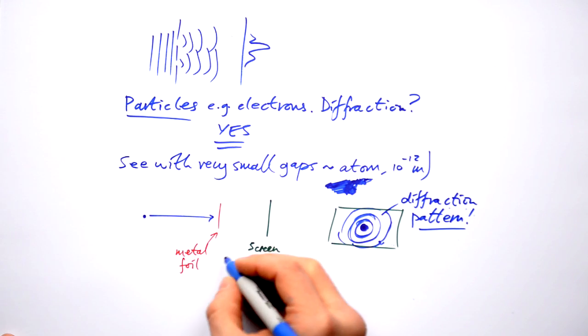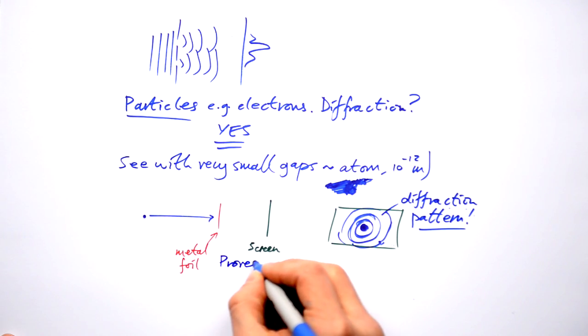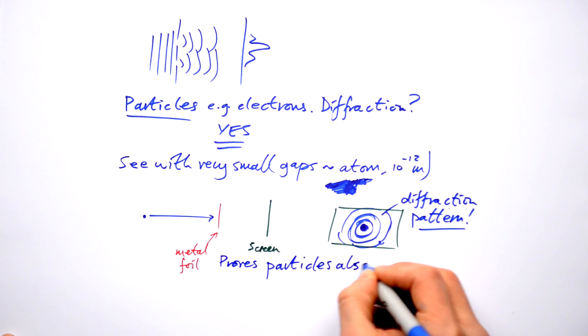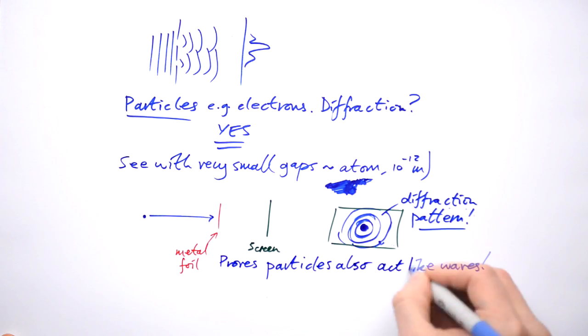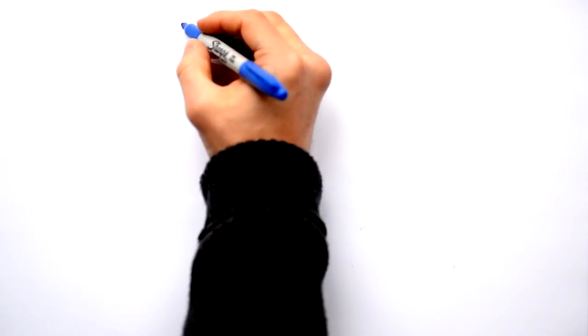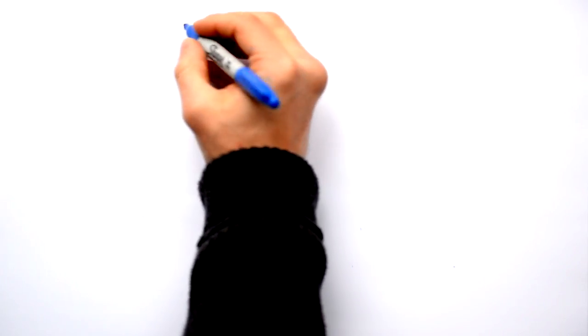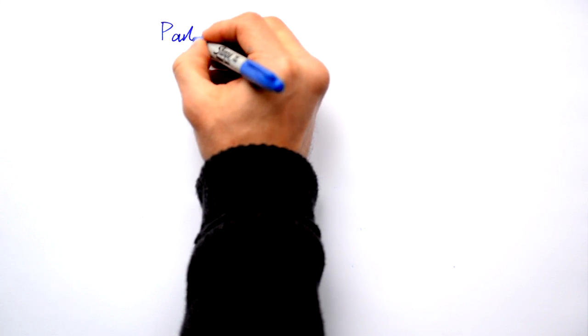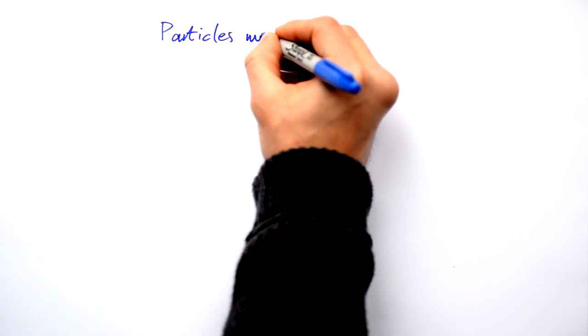So this proves that particles also act like waves. That's kind of weird isn't it? And this is because the electrons as they go past the atoms they're getting diffracted around the atoms. So if they can be diffracted and they can cause interference patterns, that must mean the particles must have a wavelength.